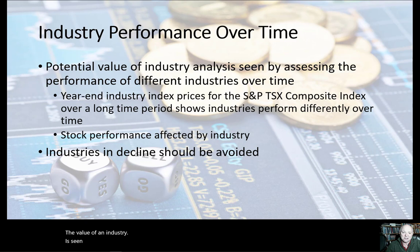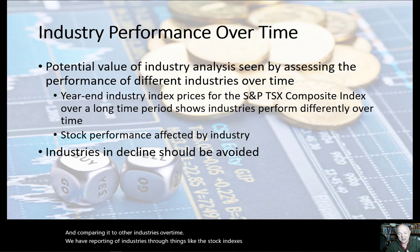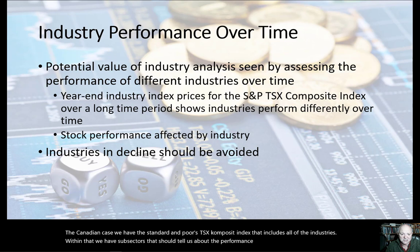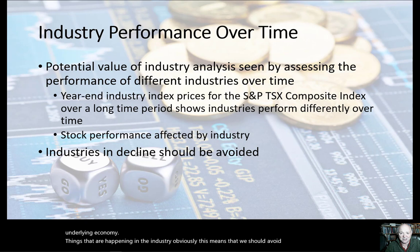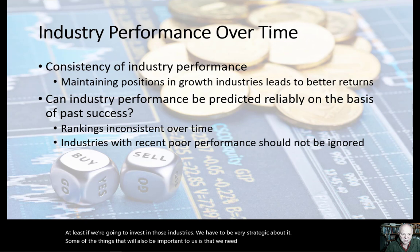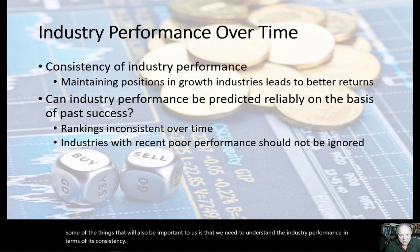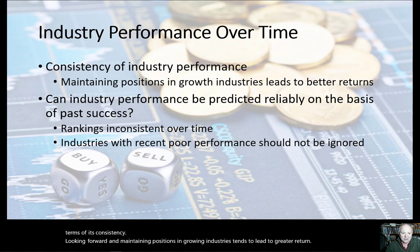The value of an industry is assessed by comparing its performance to other industries over time. We have reporting of industries through stock indexes — in the Canadian case, the S&P TSX composite index includes all industries, with sub-sectors tracking the performance of particular industries. Stock performance is largely affected by macroeconomic conditions and the industry; about 80% of value change in stocks can be attributed to things happening in the underlying economy and in the industry. We should avoid industries that are in decline, or at least be very strategic. Looking for and maintaining positions in growing industries tends to lead to greater return.